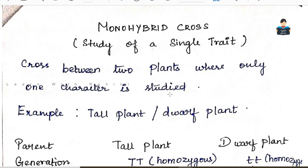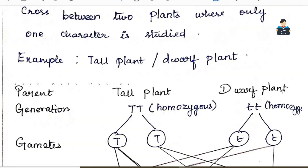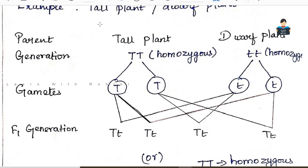Height — tall and dwarf — is another contrasting character used in Mendel's experiment. In the monohybrid cross, a tall plant and a dwarf plant are crossed. Both are homozygous. The genotype of the tall plant is Capital T, Capital T, and the dwarf plant is small t, small t.